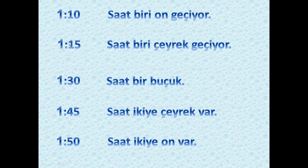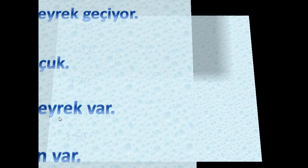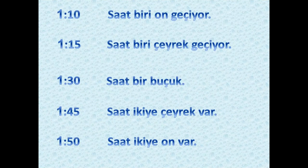These are how we read the time in analog form. If you want it in digital form we say: 'saat biri on geçiyor', 'saat biri on beş geçiyor' — or 'bir on beş', 'bir otuz' or 'biri otuz geçiyor', 'saat bir kırk beş', and 'saat bir elli'.